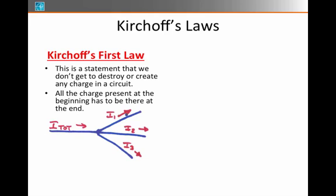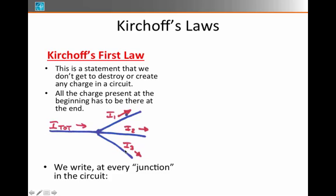So if we have a junction in a circuit — a place where a wire is coming in, there's a current flowing along that wire, and then it splits off into three separate paths, three wires joined together — then the current in each of these paths has to add up to the original current that came into that junction.